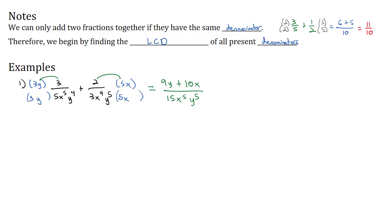That was easy because the denominators were already in factored form. But what if we have something like x squared plus x over x squared plus 2x minus 8, minus 1 over x minus 2? The first thing to note is: be very careful with subtracting fractions. To help, I'm going to add the opposite — make it plus and make the second numerator negative, so now it's a negative 1. Distribute that negative through the numerator before you do anything.